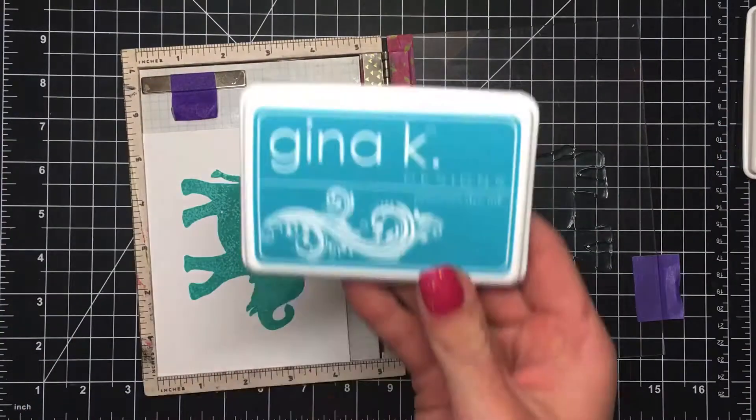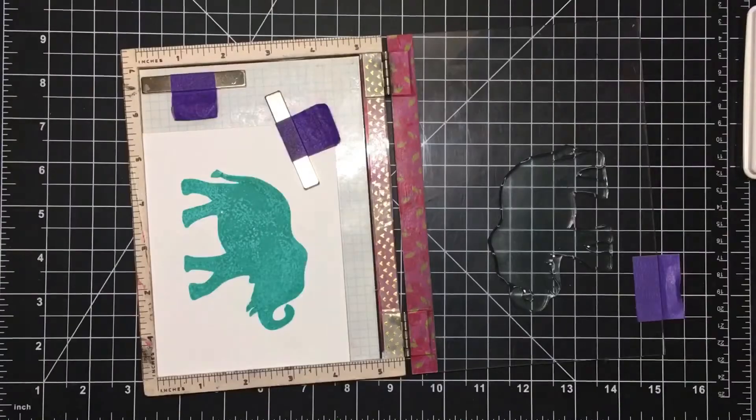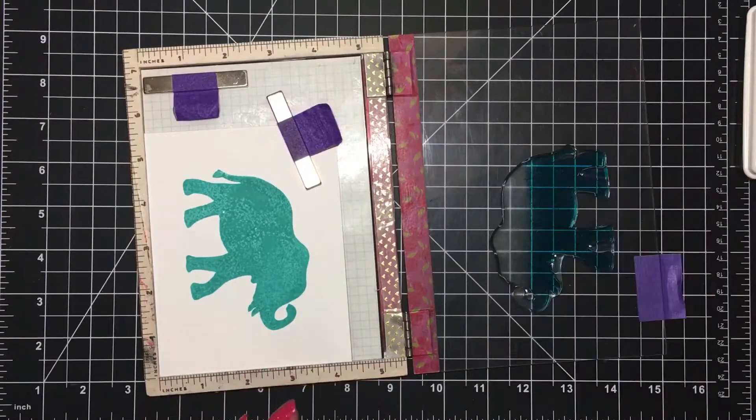When I'm happy with that I will come in with my next color which is the Blue Lagoon and cover the bottom two-thirds of the elephant with that.